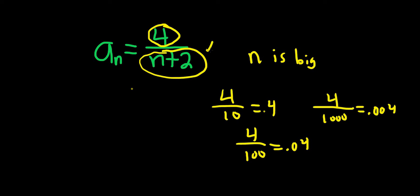So the bigger that the bottom gets, the smaller that this fraction gets. So when you take the limit as n goes to infinity of 4 over n plus 2, it just gets closer and closer to 0. So this is equal to 0.